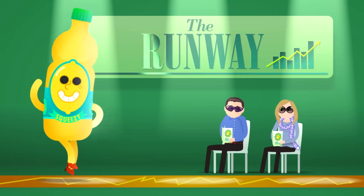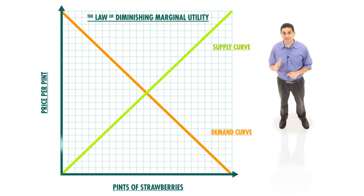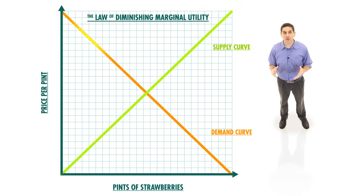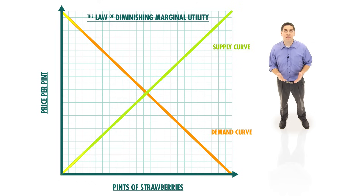So, that's marginal analysis. Armed with our new knowledge, let's go back and look at the most important model in microeconomics: supply and demand. Let's use the market for strawberries. The price of strawberries is on the vertical axis, and quantity is on the horizontal axis. The demand curve for strawberries is downward sloping, showing the law of demand. When prices are high, people don't want to buy very many, and when prices are low, people want to buy a lot. The shape of the demand curve reflects the idea of the law of diminishing marginal utility.